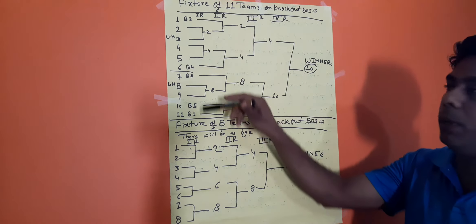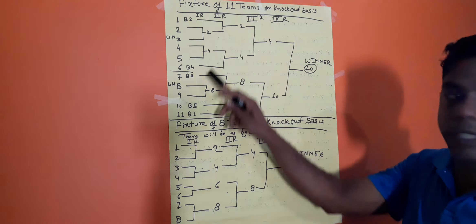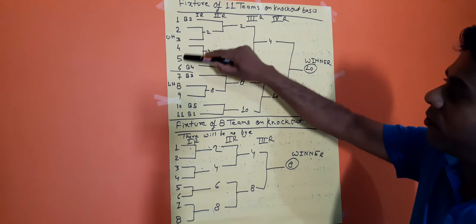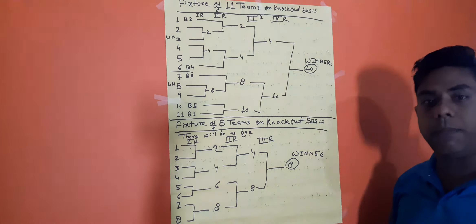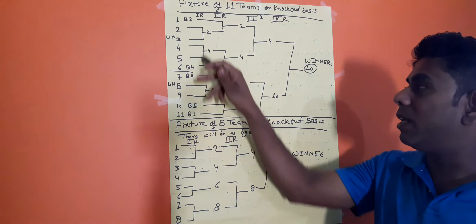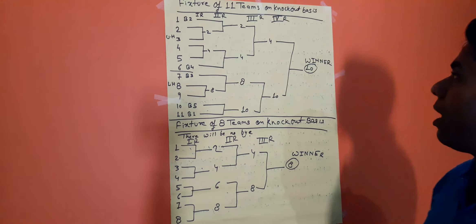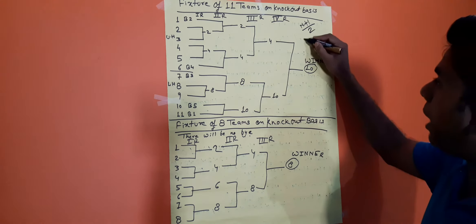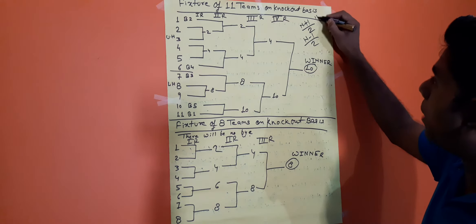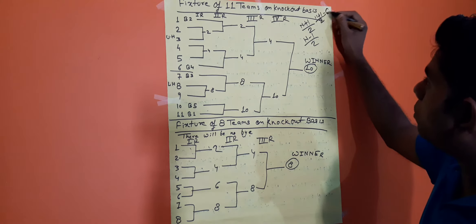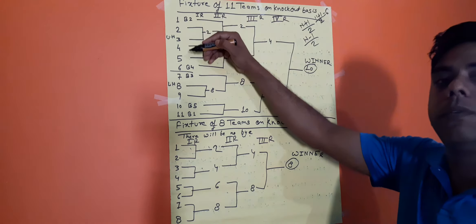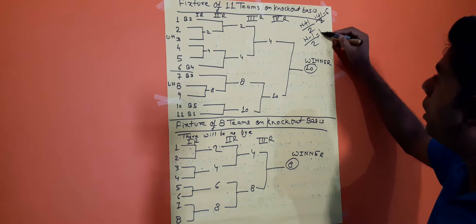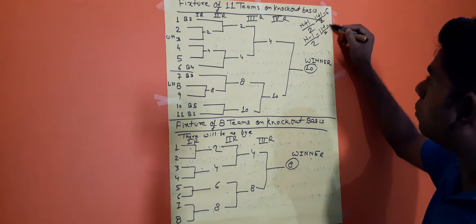In this picture, we divide the teams into two halves — upper half and lower half. For the upper half, the formula is (n+1)/2, which gives us (11+1)/2 = 6 teams. For the lower half, the formula is (n-1)/2, which gives us (11-1)/2 = 5 teams.